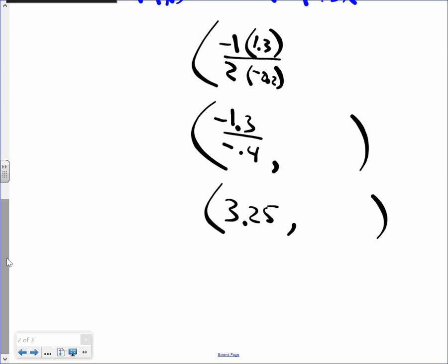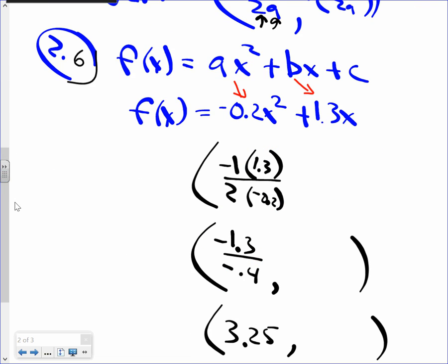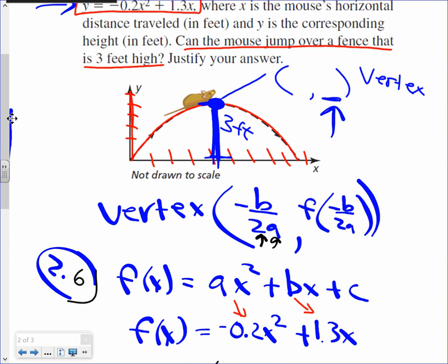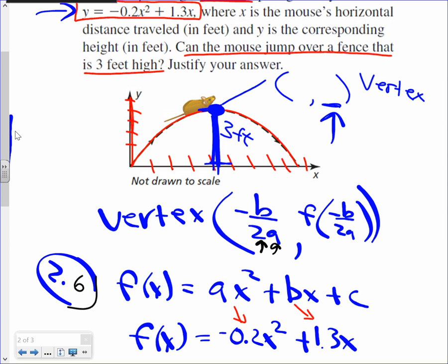What does 3.25 represent here in this case with the mouse? The x-coordinate. And what does the x-axis represent? The horizontal distance. So from here to here, at the highest point, when the mouse is at the highest point of his leap, he's 3.25 feet away from where he jumped from. This is 3.25 feet right here. Now we're going to figure out how high, and we're going to see if he's lunchtime. We're going to see if he can leap higher than 3 feet.